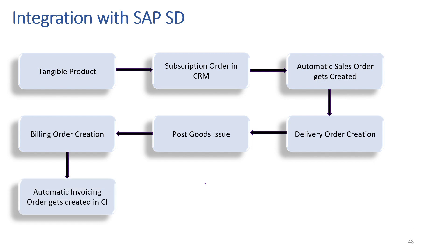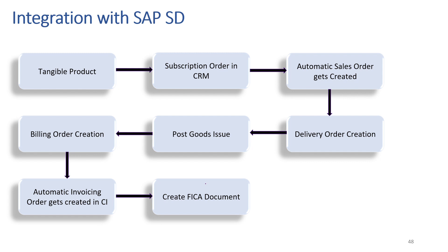Here the twist will happen. In our normal sales and distribution, once we do billing order creation using VF01, GL account posting will happen. But here, instead of GL account posting, an automatic invoicing order will get created in CI, which later creates a FICA document. This invoicing order will then be invoiced in the convergent invoicing module, similar to subscription products. With the invoicing document a FICA document will get generated, which will then be converted to an FI document after summarization of the reconciliation key happens.